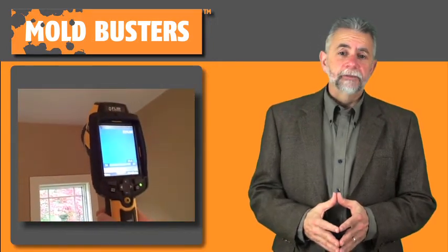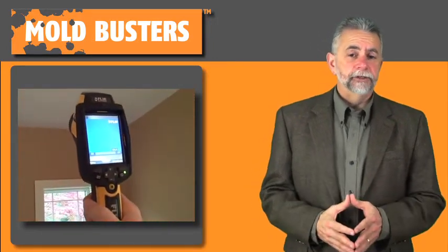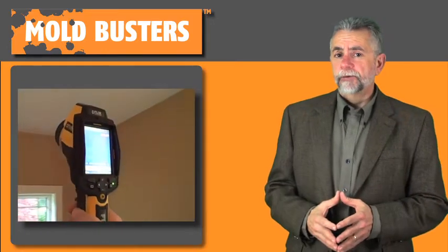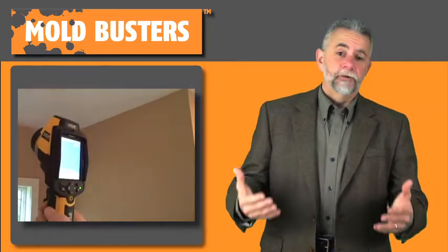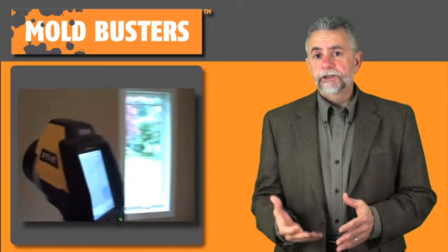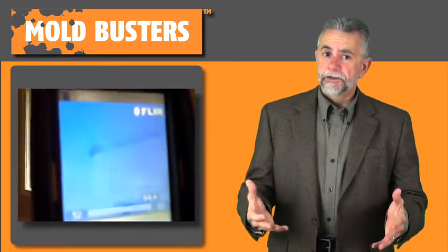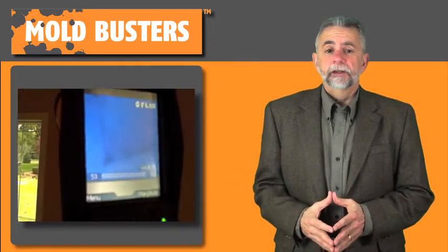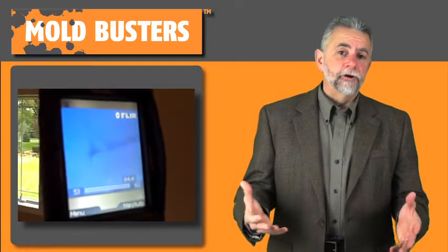Objects that emit heat are emitting energy. This energy can be classified as infrared energy. With a thermal imaging camera, one can capture this energy in a graphic form. As the signal comes into the camera, it is processed and translated into an image that can be viewed, much like a photo or a video.